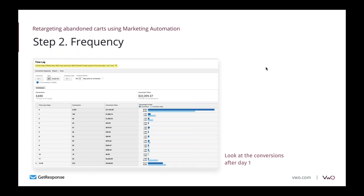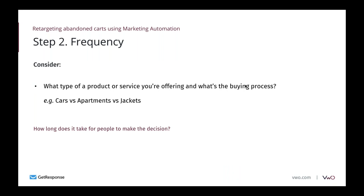It's worth looking at the timeline report to see when people are converting. For example, if you have a SaaS with a 30-day free trial, most people will convert on the very first day, but also on the very last day when the free trial is ending. It all depends on the product you're selling. Also consider the product type — if you're selling simple jackets, most people convert on the first day, but if you're selling cars or apartments, most people don't buy on the spot after receiving an email.